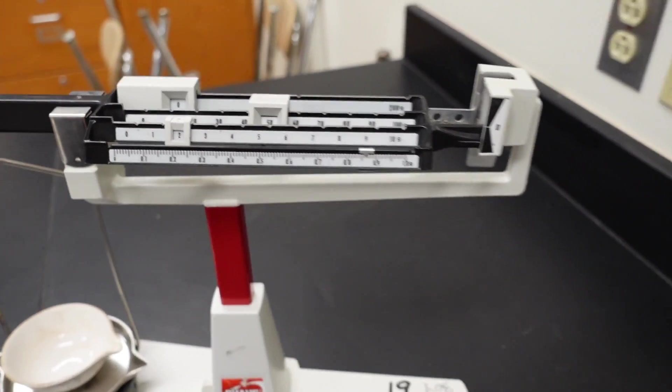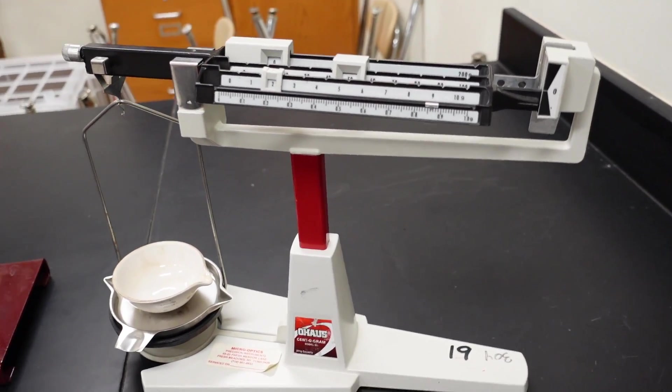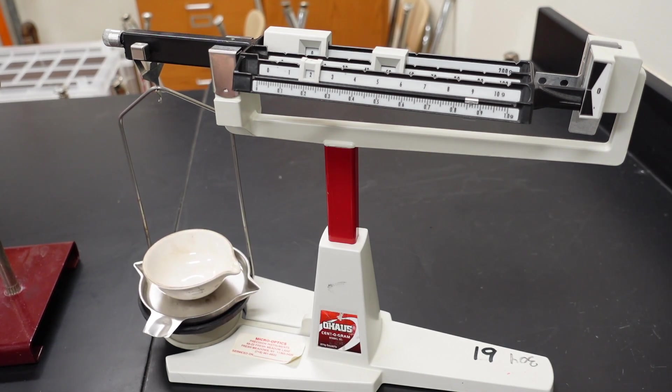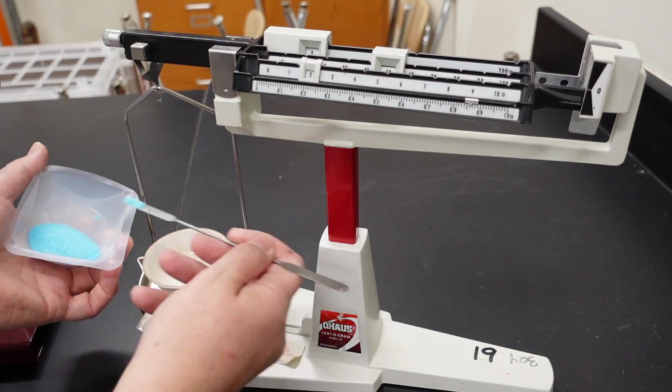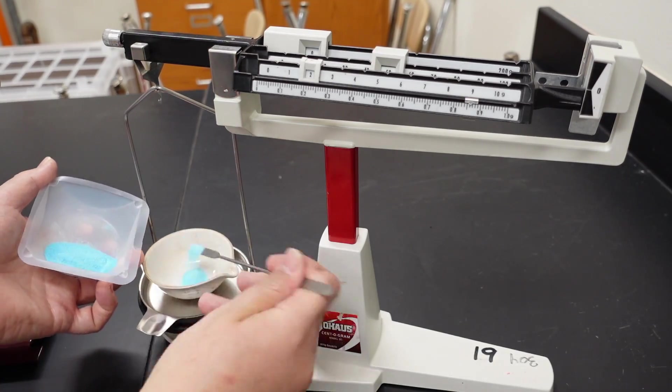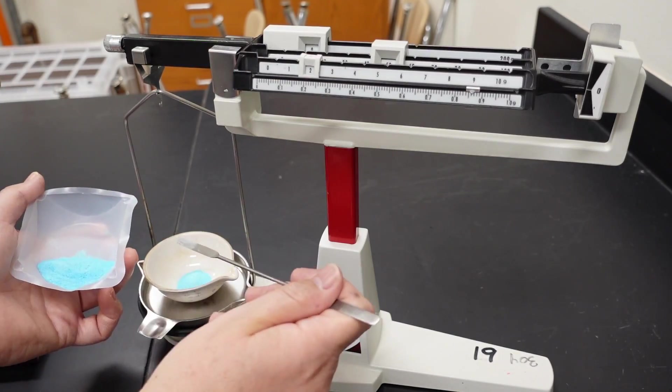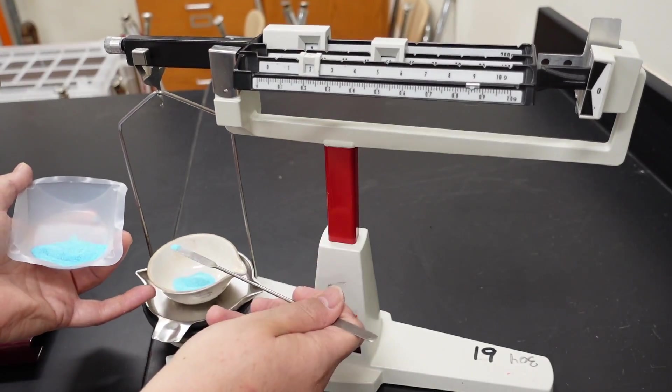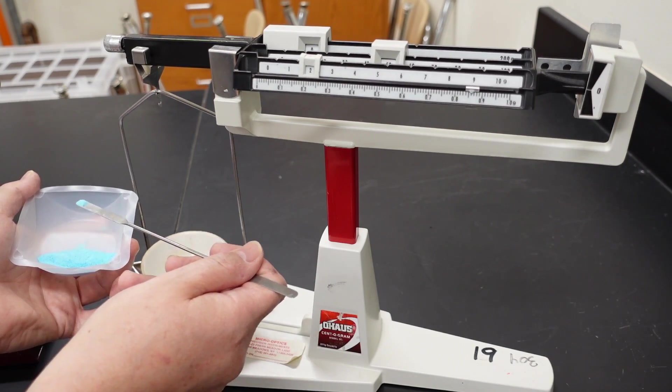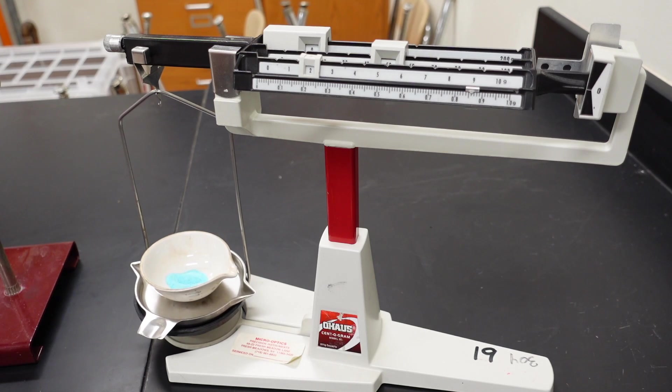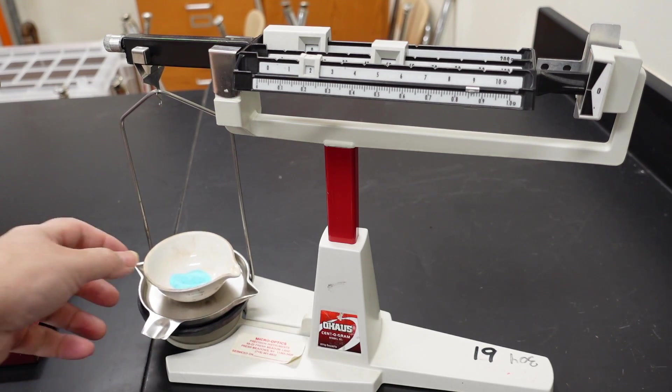Now obviously the balance is not even so we have to add enough of our hydrate for the mass to balance out. So I will use a micro spatula to do that. Okay, now we have exactly two grams of hydrate. 2.000 grams of hydrate.